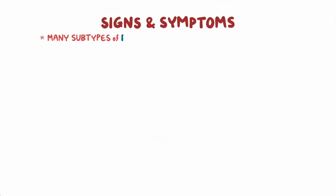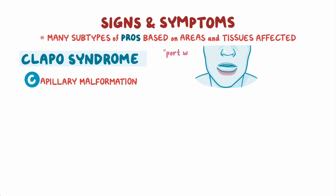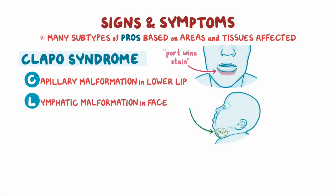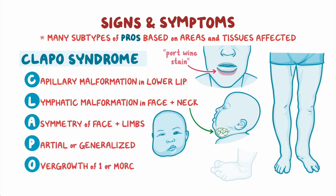There are many subtypes of PROS, based on the areas and tissues affected. CLAPOS syndrome involves capillary malformation, also known as port wine stain, in the lower lip, lymphatic malformation in the face and neck, asymmetry of the face and limbs, and partial or generalized overgrowth of one or more body segments.